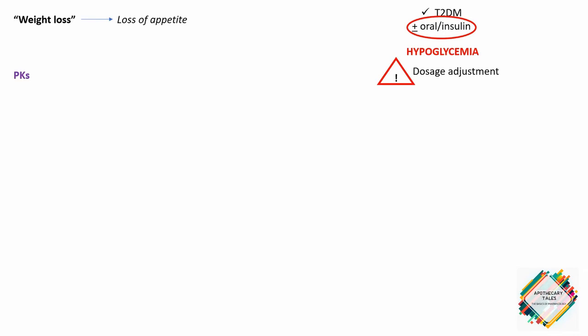Talking about the pharmacokinetics: metformin is very well absorbed orally, is not bound to serum proteins, and is not metabolized. It is primarily excreted via the urine unchanged.